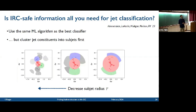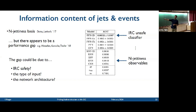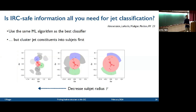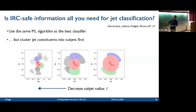I think we really need to understand that gap because it essentially tells us how we should try to extract all the information that appears to be there in these events. There are a couple of possibilities: the gap could come from IRC safety issues — the IRC-unsafe classifier versus Sudakov-safe or IRC-safe N-jettiness observables — or it could be the type of input, position information versus relative angles, or the architecture being different. We haven't fully nailed down where that difference is coming from, but it's really essential to try to do this to max out the information content we get from collider experiments.